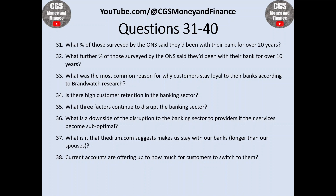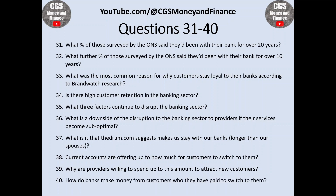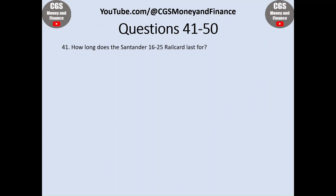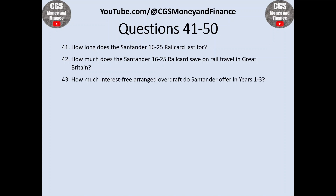Question thirty-seven: what is it that the drum.com suggests makes us stay with our banks longer than our spouses? Question thirty-eight: current accounts are offering up to how much for customers to switch to them? Question thirty-nine: why are providers willing to spend up to this amount to attract new customers? Question forty: how do banks make money from customers who they have paid to switch to them? Question forty-one: how long does the Santander 16-25 railcard last for? Question forty-two: how much does the Santander 16-25 railcard save on rail travel in Great Britain?